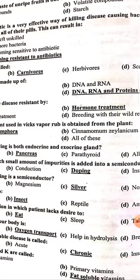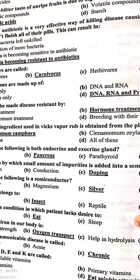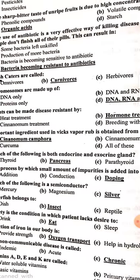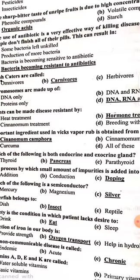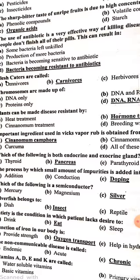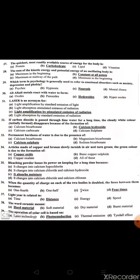Endemic is a communicable disease and pandemic is a worldwide communicable disease. Vitamins A, D, E, and K are called fat-soluble vitamins, while Vitamin C is water-soluble.